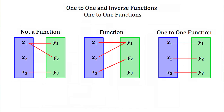In this first mapping diagram, this is not a function. Typically when we have a mapping diagram or an equation, x represents our domain values and y represents our range values. For this to be a function, each domain value or x value can have only one associated y value. Here, x1 is equal to either y1 or y2, so this one domain value has more than one range value. So this is not a function.